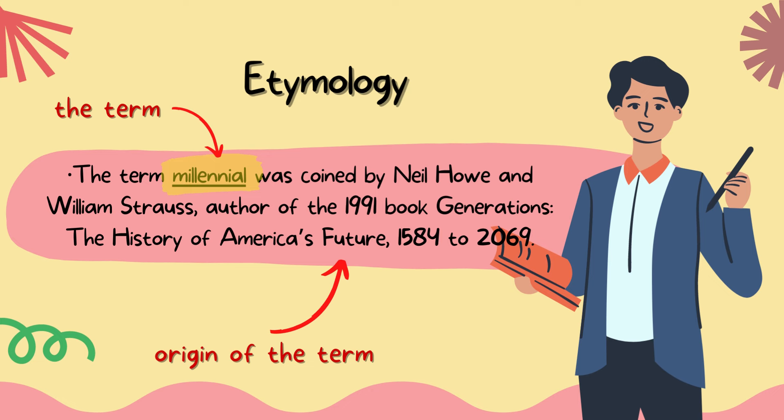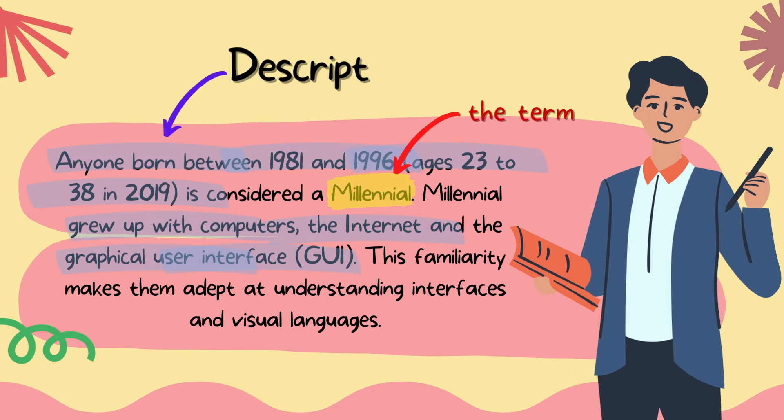Another technique is through description. Description expresses the quality, kind, or condition of what is denoted by the modified term. For example, anyone born between 1981 and 1996 is considered a millennial. Millennials grew up with computers, the internet, and the graphical user interface. This familiarity makes them adept at understanding interfaces in visual languages.